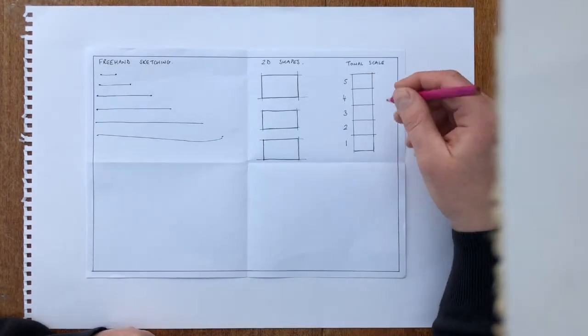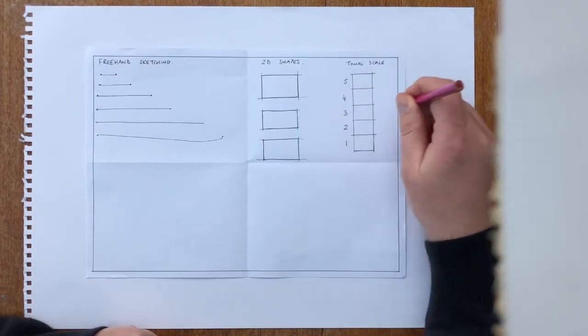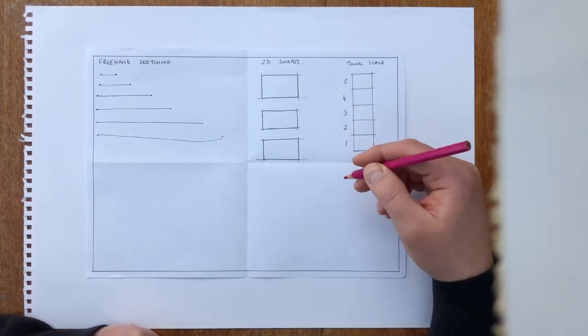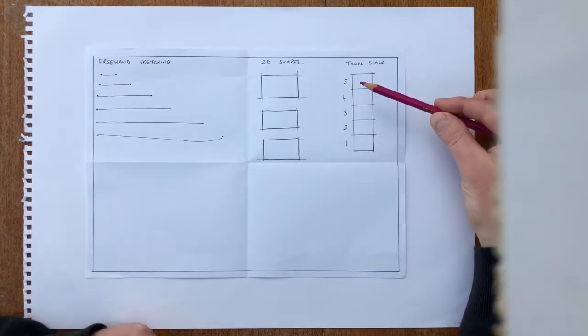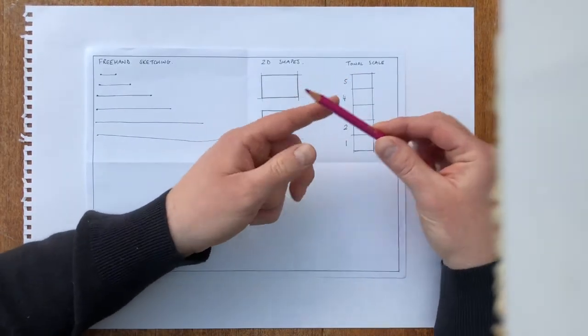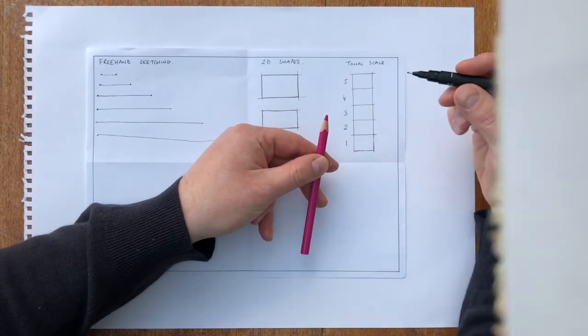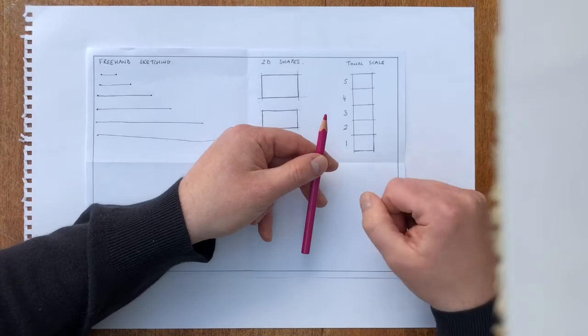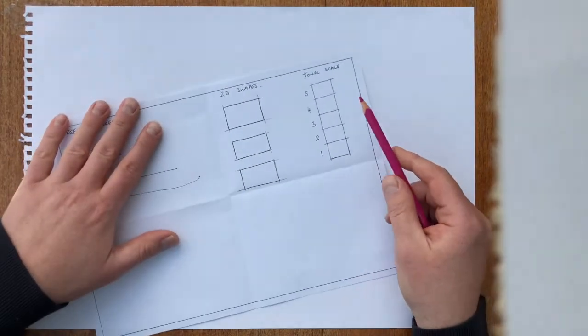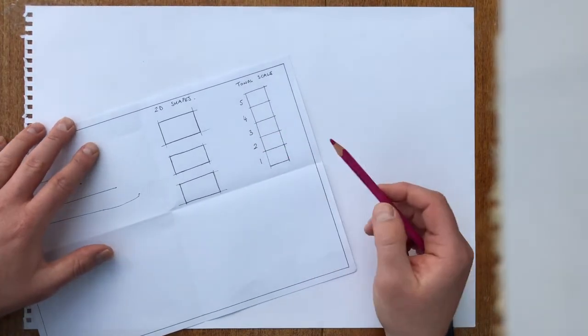If you use the tip of the pencil, what happens is you'll get lots of lines shown up in your work and it'll look quite scribbly. By using the side of the pencil, you won't get those lines. And because the side of the pencil here is about four or five times longer than the tip of the pencil, you will work four or five times quicker.